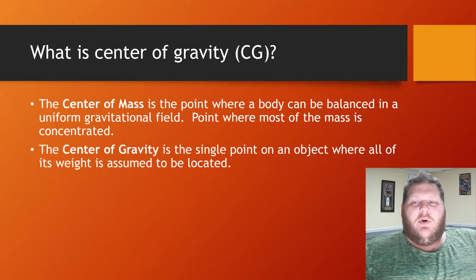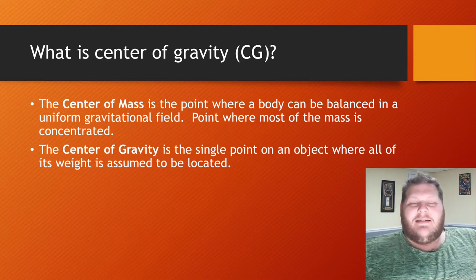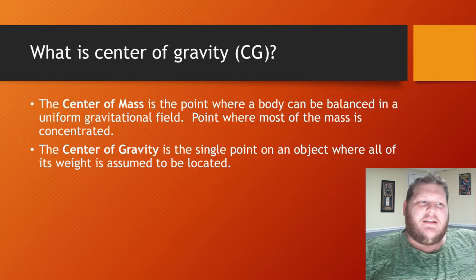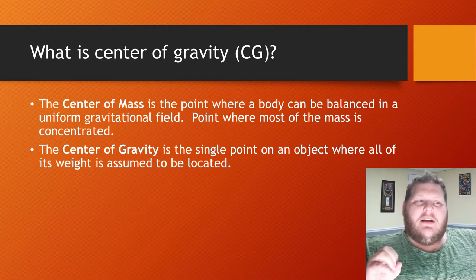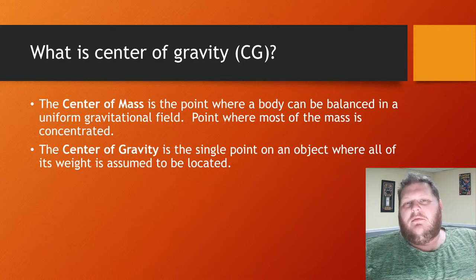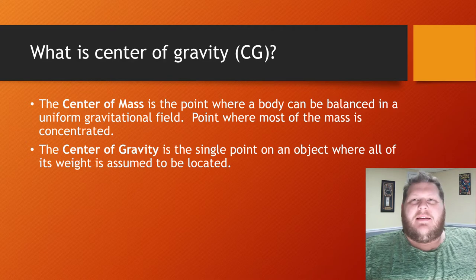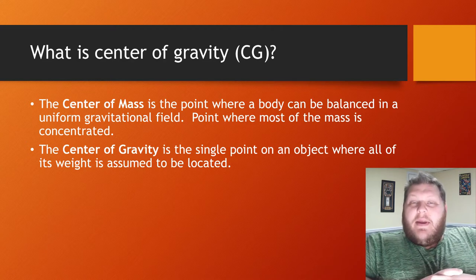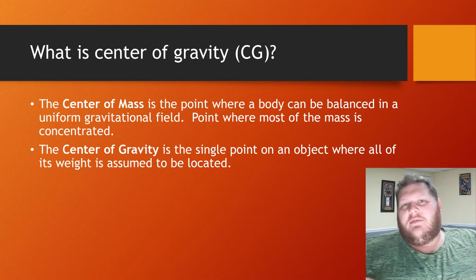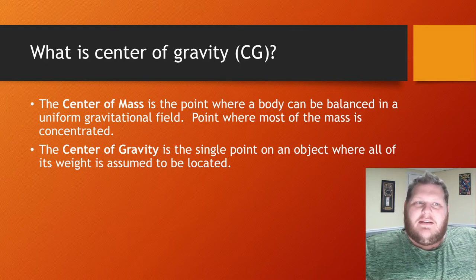The center of mass is just the point where the body can be balanced in a uniform gravitational field — it's the average point of where most of the mass is concentrated. Our center of gravity is a little bit different. We visualize the center of gravity as being a single point where all of that weight is assumed to be located.